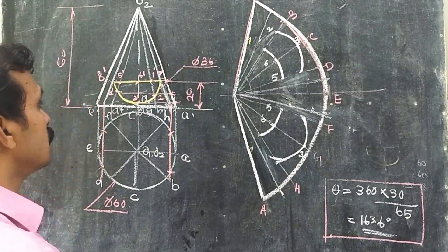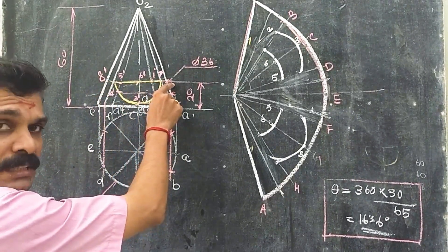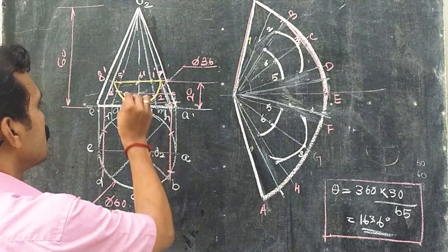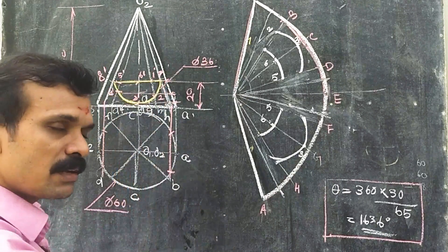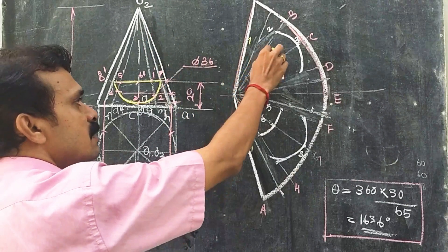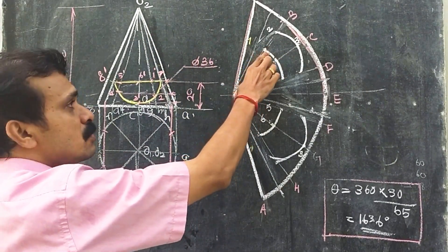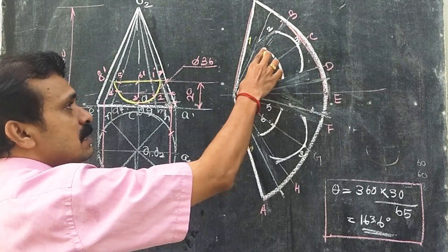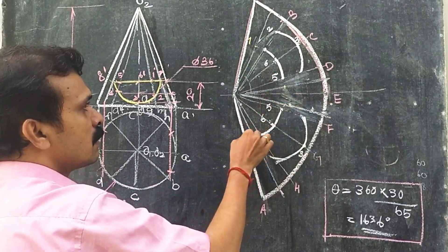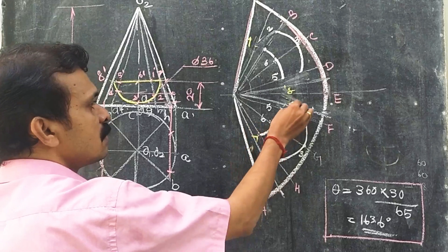Now we have to locate points 7 dash and 8 dash on these 2 generators. Transfer points 8 and 7 to the true length line, take that distance, and mark it on the corresponding generators. Since points 5, 6, 1, 7, and 8 are lying on the same line, that will be an arc — that distance will be the same. Take this distance and mark it on the generators: mark it here, mark it here, mark it here, mark it here. This will be 7, this will be 8, this will be 7, this will be 8.